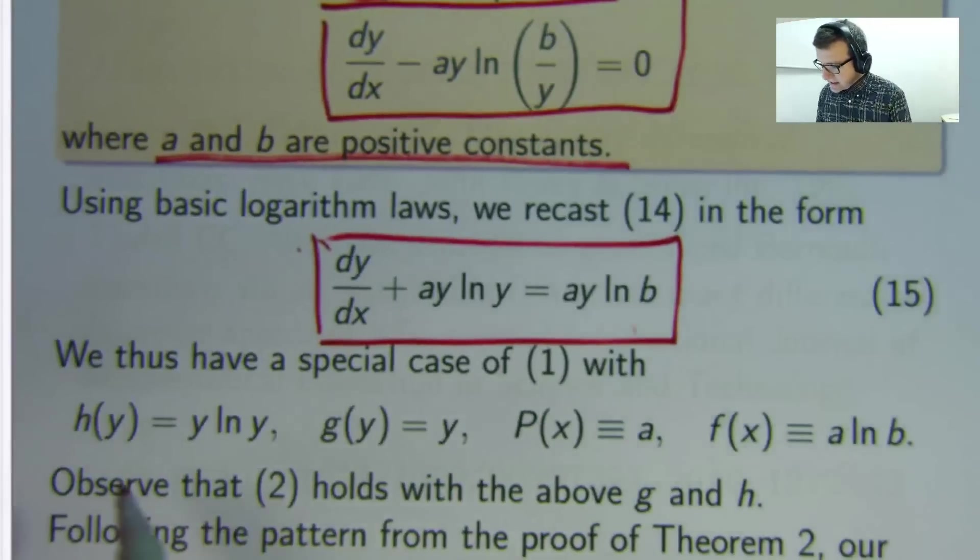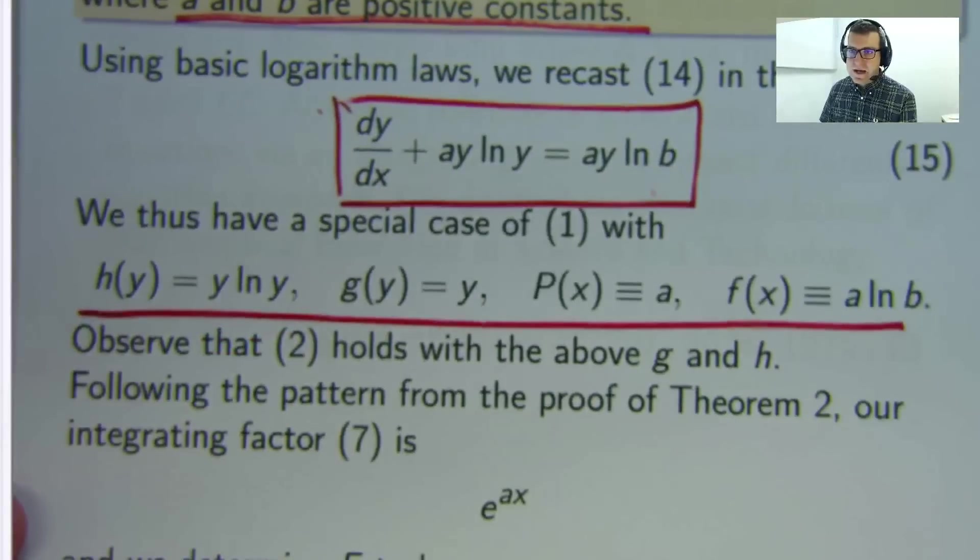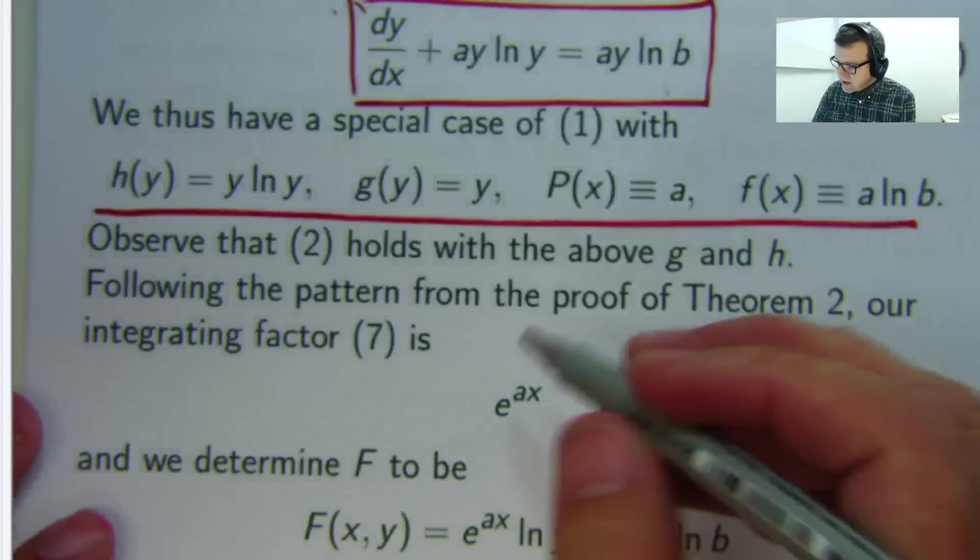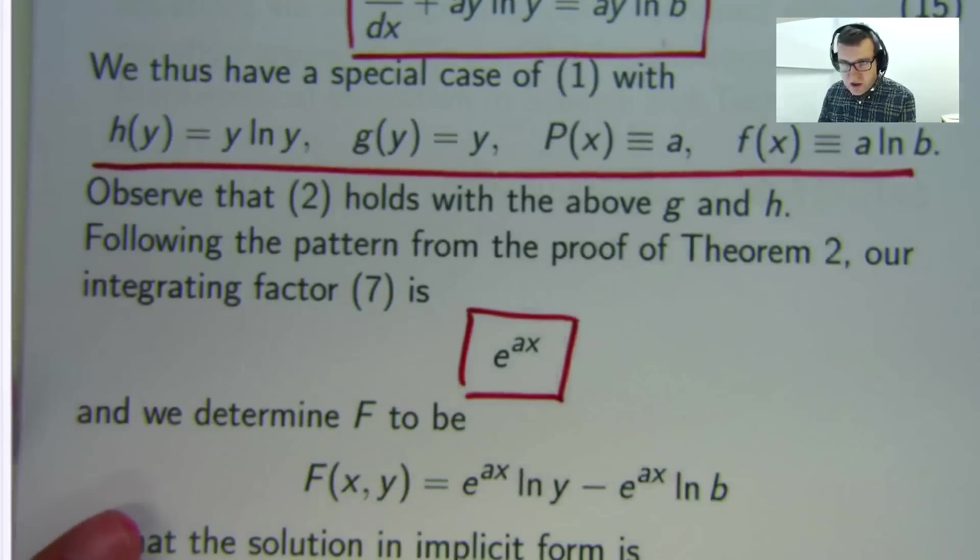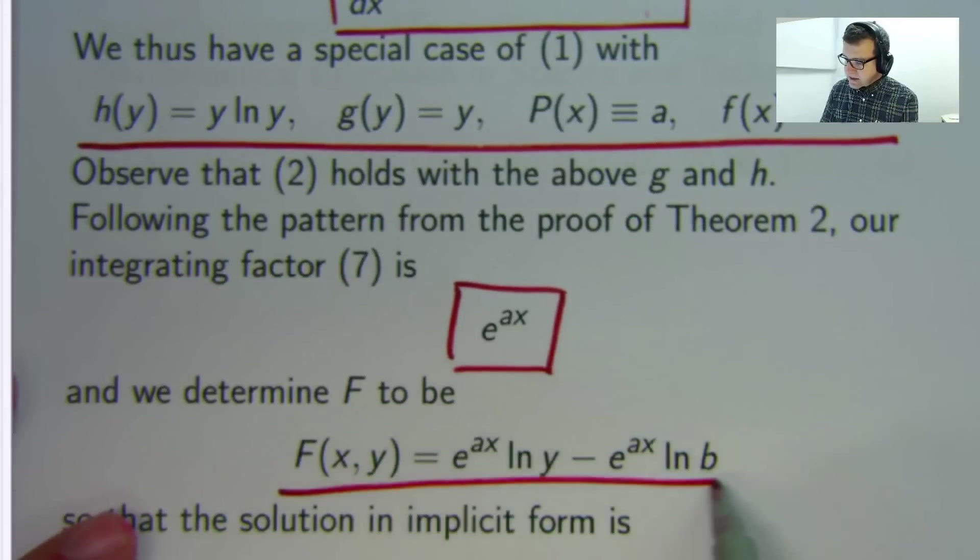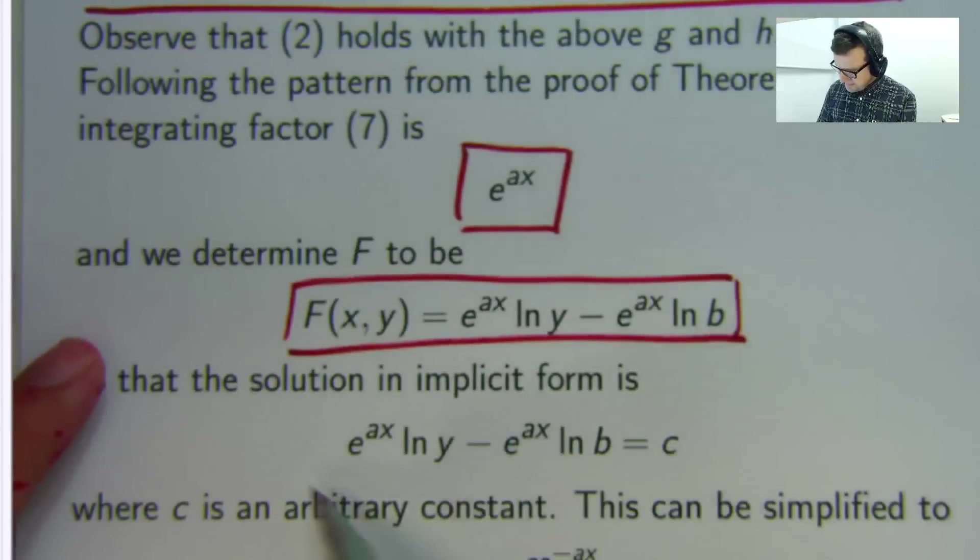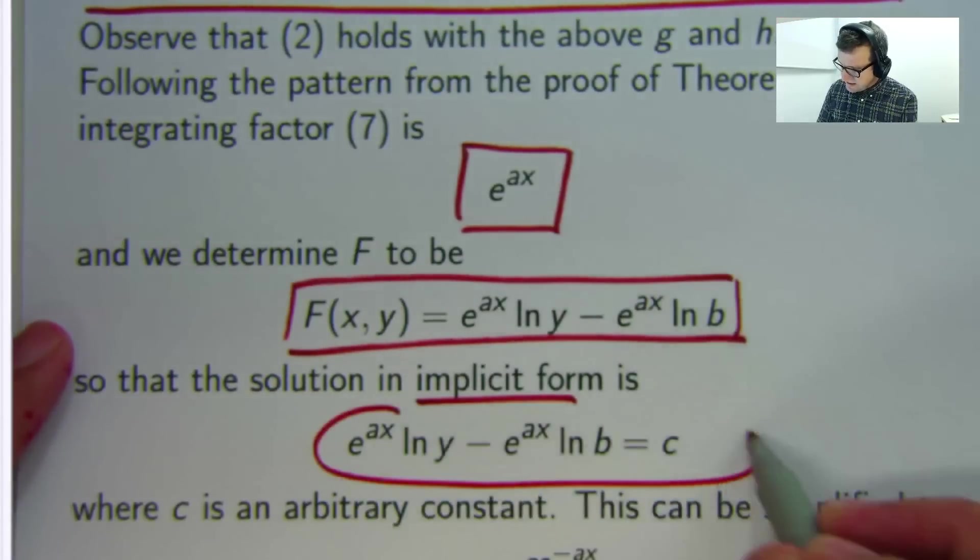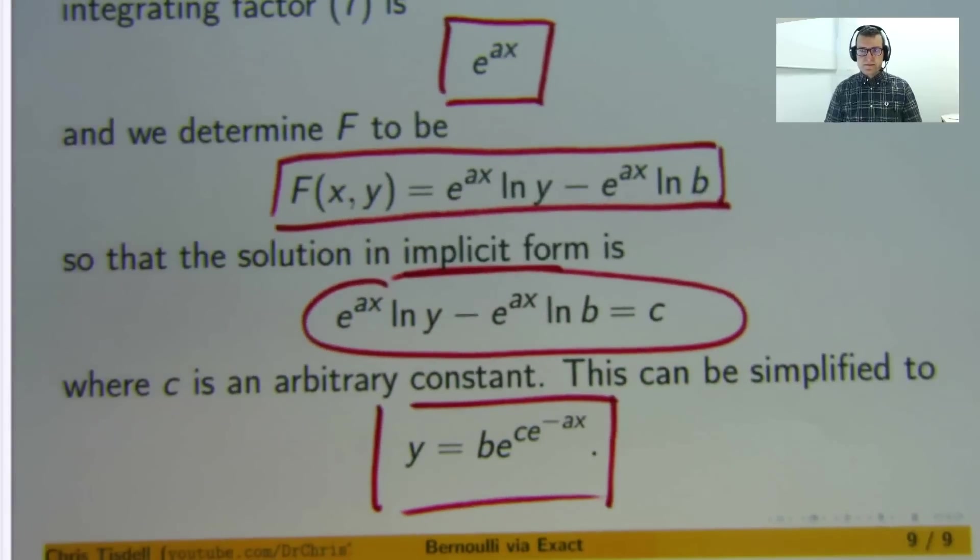So here are our special functions. Now just repeat what I did before to solve this problem using an exact method. You identify your integrating factor, you go through the steps so multiply through by this you go through the steps and then out comes your F in implicit form the solution is something like this and there you have your final solution.